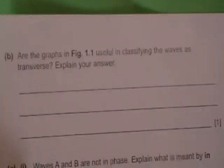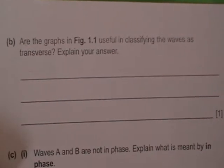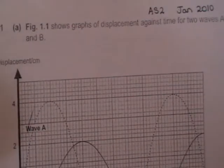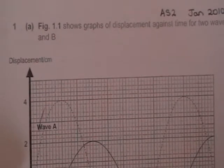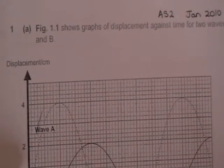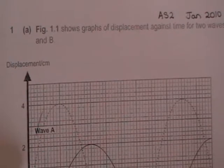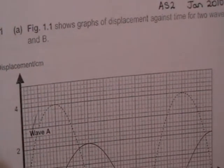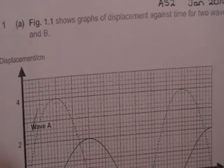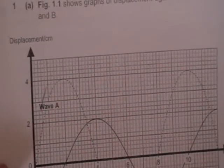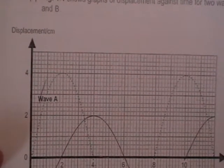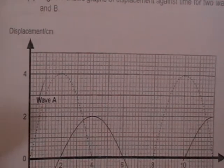The next question says are the graphs useful in classifying the waves as transverse? Explain your answer. Now I have no answer to this but no specimen or answers from CA for this. But figure 1.1 shows graphs of displacement against time for two waves A and B. And it doesn't tell you anything about how they are displaced from their rest position if they are displaced in a parallel direction to the direction of the wave's travel or in a perpendicular direction.